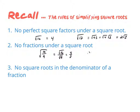If I had something like the square root of 16 over 5, I'd be able to break that down into the square root of 16 on top and the square root of 5 on the bottom, which would be 4 over the square root of 5. But that motivates our last rule: we can't have any square roots in the denominator of a fraction.